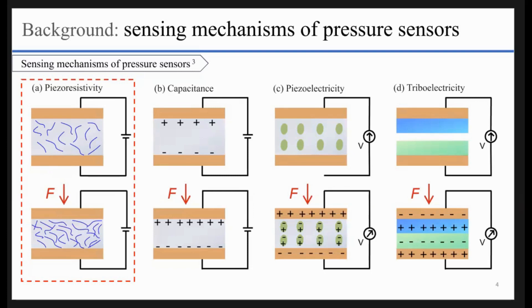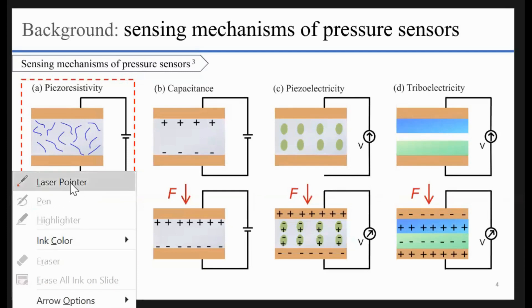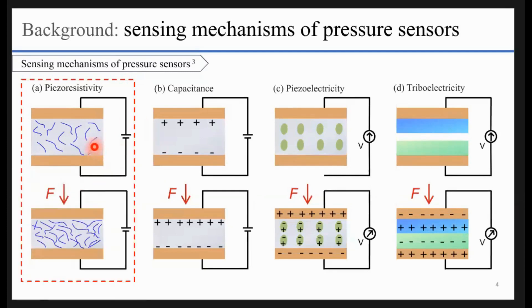The basic principle of piezoresistive pressure sensors is that there are conductive pathways in the sensor itself. Usually, people will use carbon nanotubes, graphene, or silver nanowires to form the conductive path. The path will be sealed in a non-conductive flexible material to hold the conductive network.